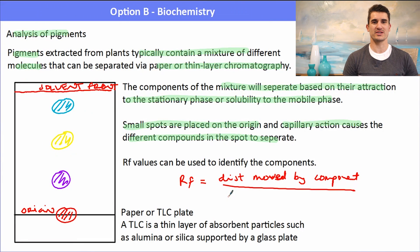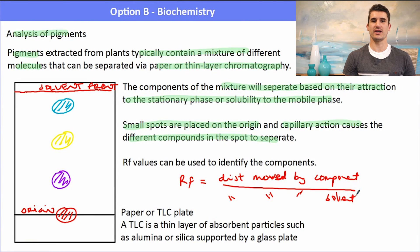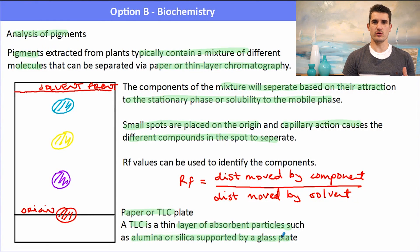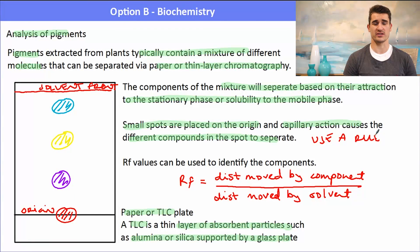What's the difference between paper and TLC? A TLC plate contains a thin layer of absorbent particles such as alumina or silica coated onto a glass plate, which improves resolution. If this comes up in the exam, you may need to calculate RF values, so make sure you take a ruler into the exam and use it to measure distances.